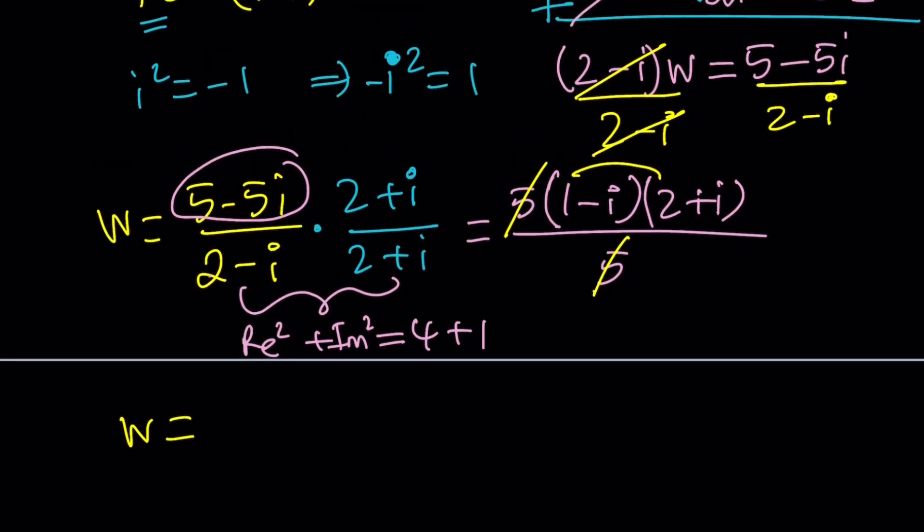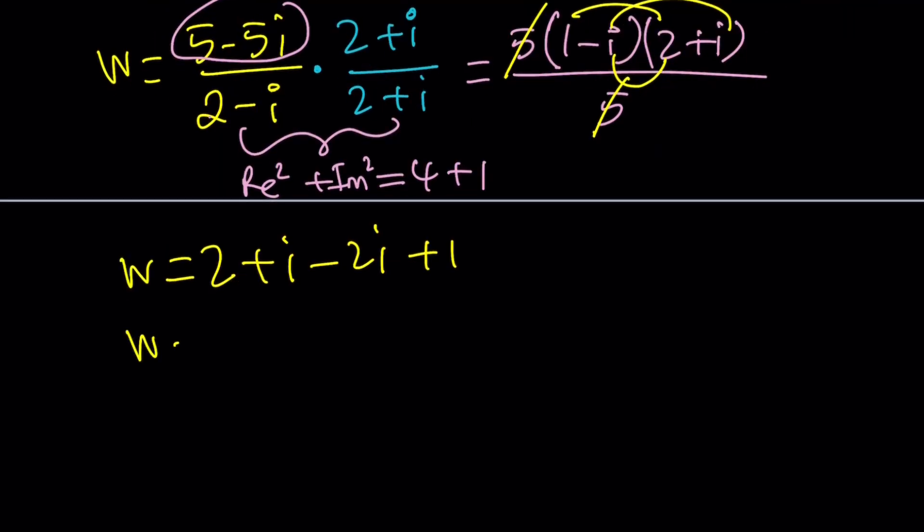Let's go ahead and distribute. 1 times 2 and then 1 times I. And then I times negative 2 or negative I times 2, negative 2I. And finally, again, negative I squared, which is positive 1. We see that a lot, so make sure you memorize that. And now we get 2 plus 1, which is 3 minus I as W. So that gives us the value of W.